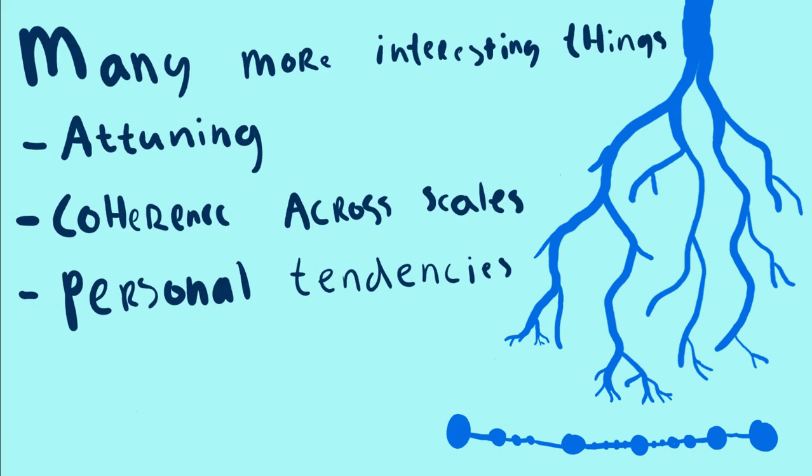Well, there are many more interesting things to discuss, but I think we don't really get into that now. Like attuning to the right moment - which scale is necessary at this moment? Do we need to focus on the details or do we need to look at the whole picture? That's also related to the coherence across the scales. If you know your purpose, you know what to do, so then the small scales are attuned to the large scales. And there are also various personal tendencies to focus on the small scales and the large scales, but we won't really get into that.